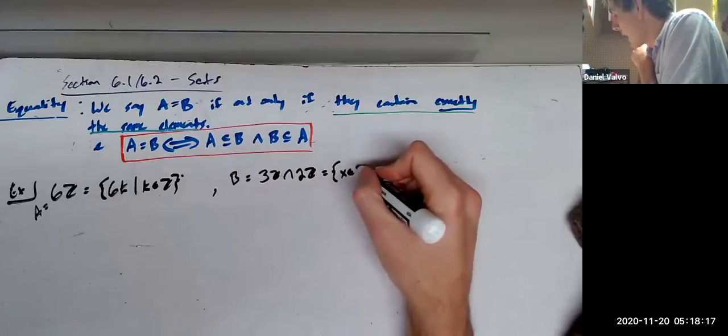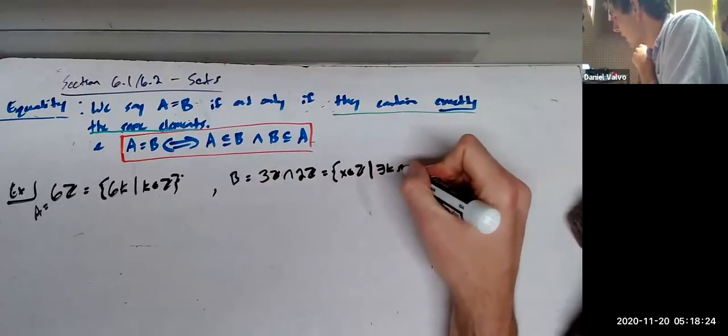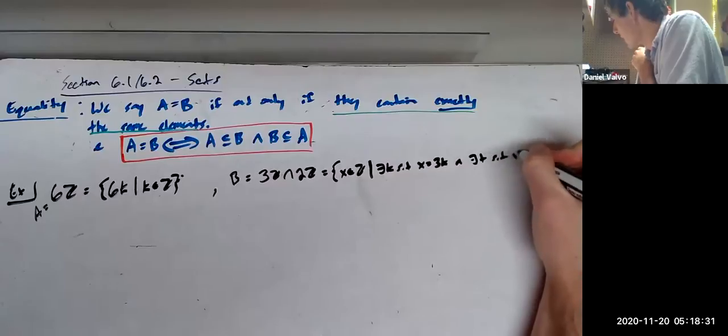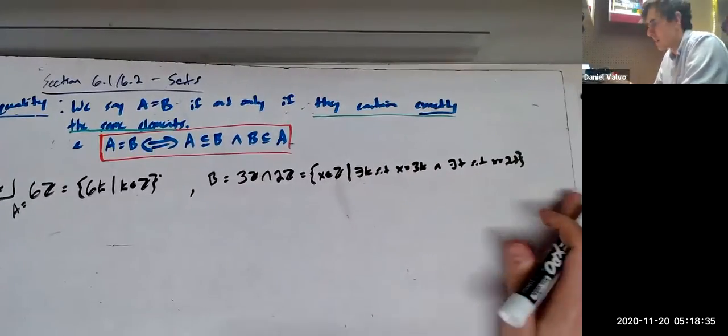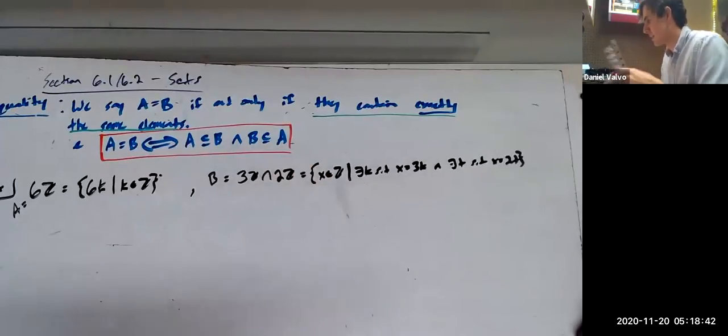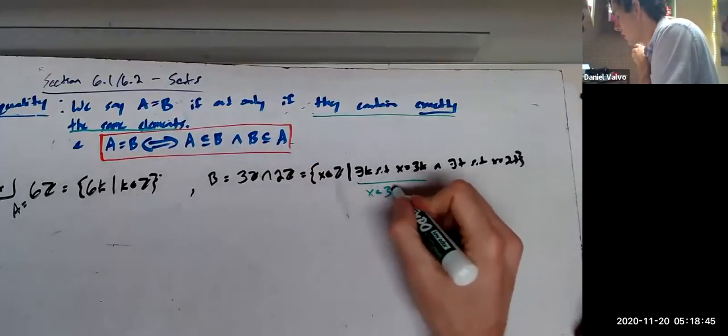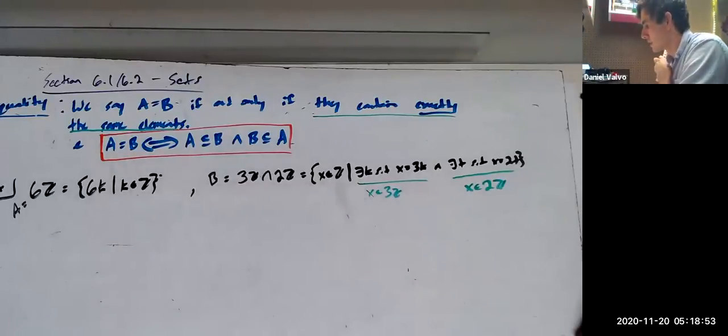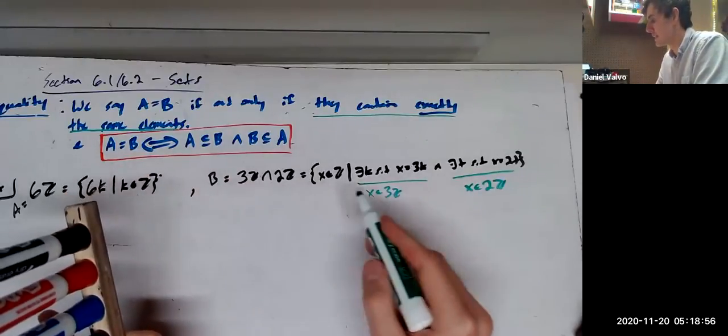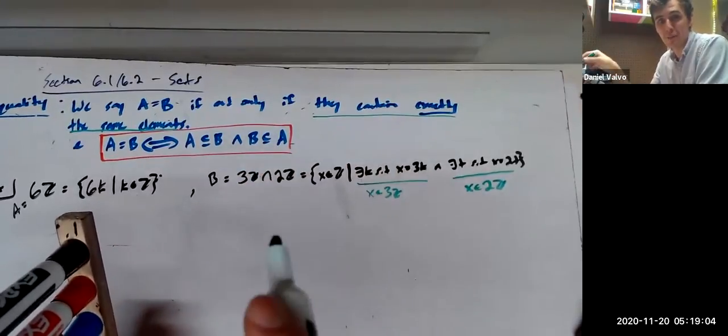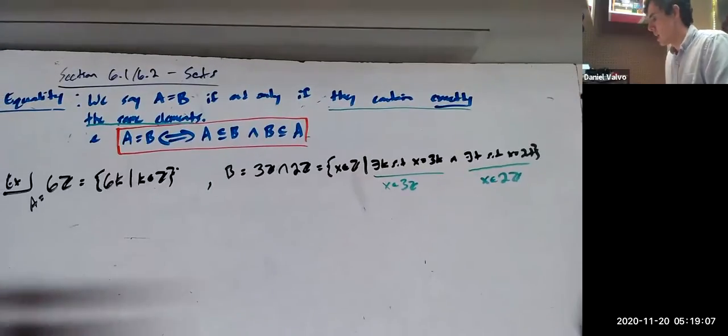And what that's going to end up meaning is going to be an x, and actually, in the integers, x in the integers, such that there exists a k, such that x equals 3k, and there exists a t, such that x equals 2t. And just to give you guys a little preview, right? If there exists a k such that x equals 3k, that means, this means, x is in 3Z. So, if B is the set of all x that are both in 3Z and 2Z, that gives you an idea of what the intersection is, right? Intersection, we've heard that before. It's everything in both. We'll see that in a second. But anyway, this is what B is going to be.